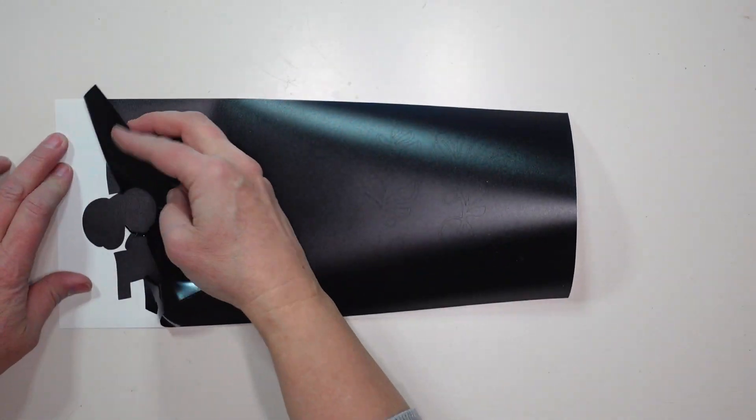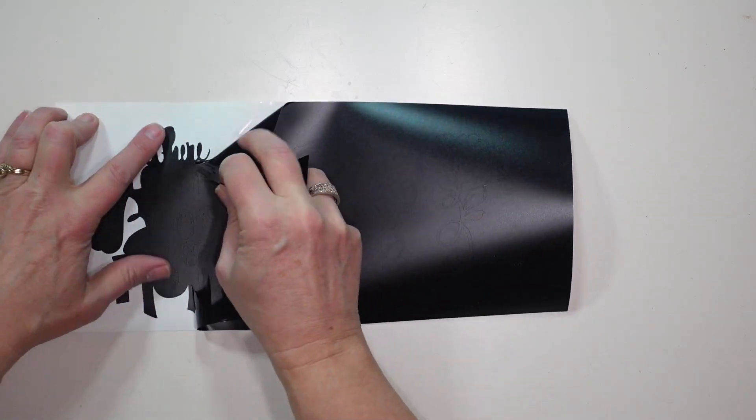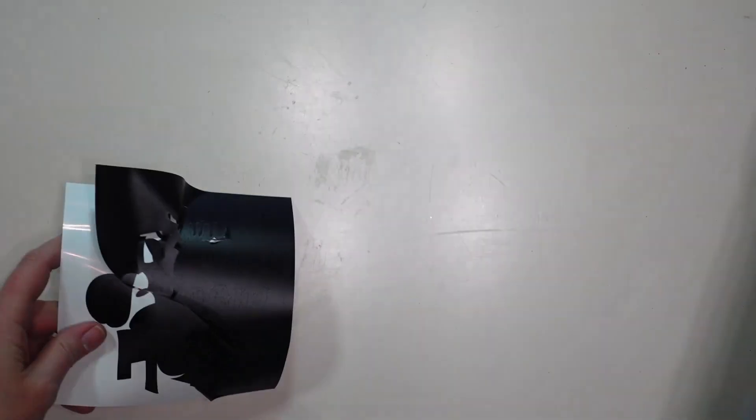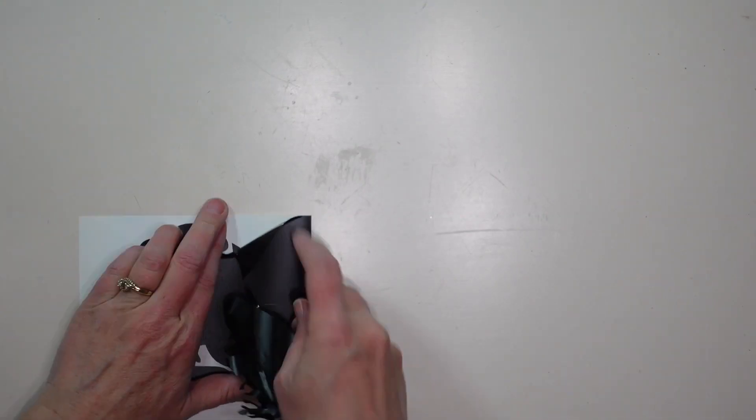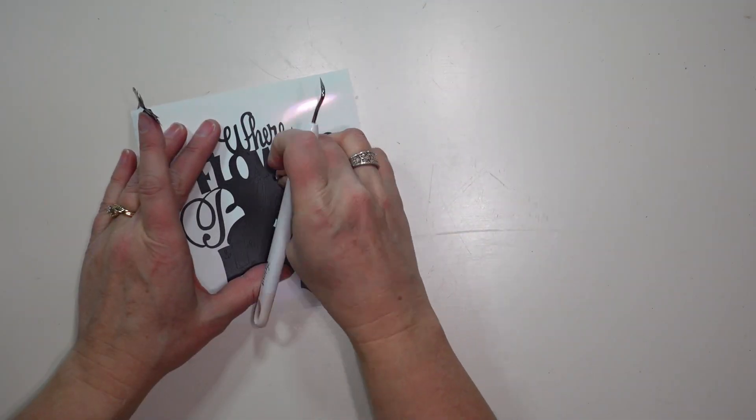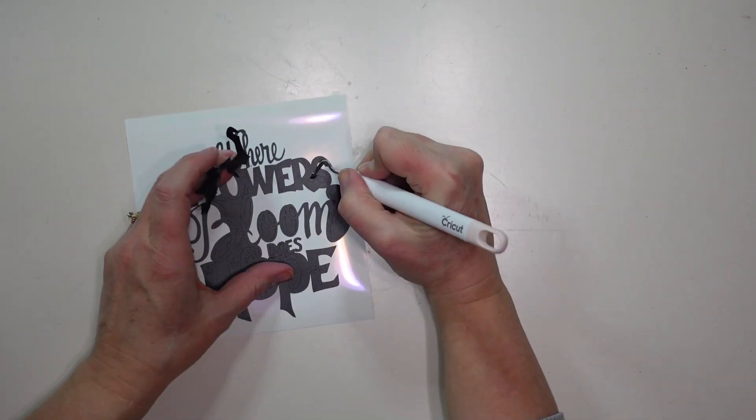Now that my design is cut I'm going to peel back what I don't need and I started to do this but I decided it would be easier if I cut each design apart, so I'm going to do that and then I'm going to weed out all the parts that I don't need.